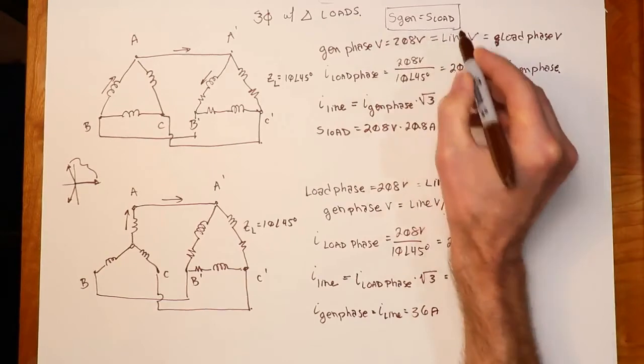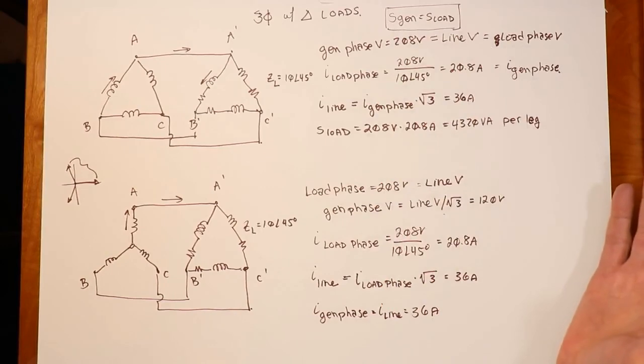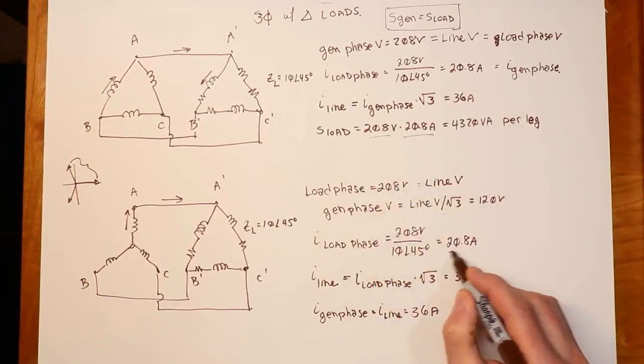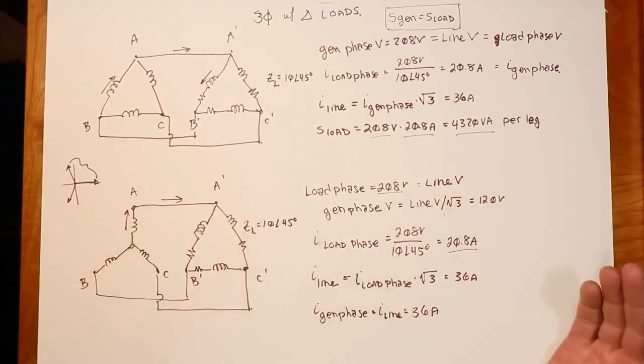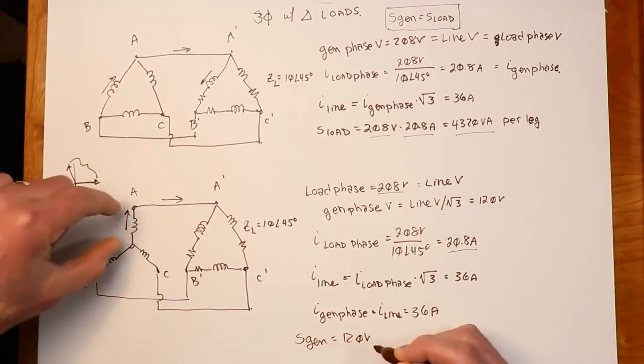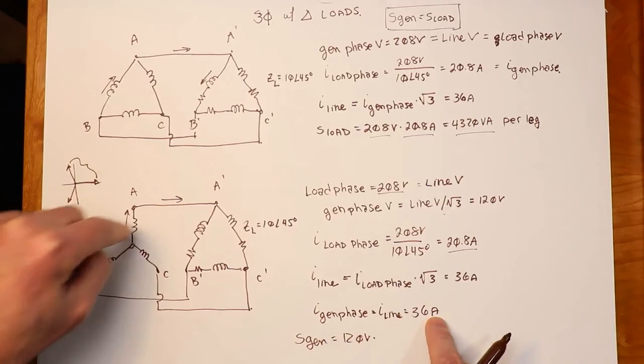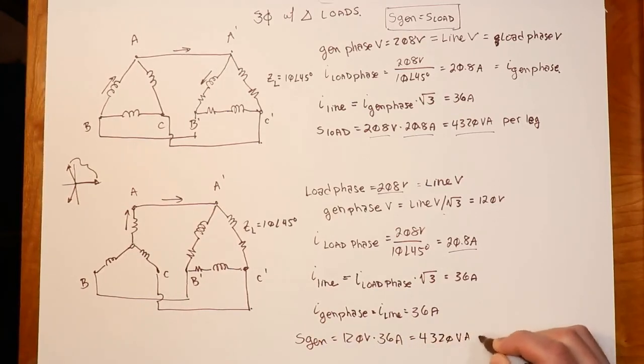Last thing. What do we have for the load and the generator? Well, the load's identical. I mean, this doesn't change. We still have 208 times the 20.8. There's the 20.8, there's the 208. So that's still going to be 4320. Now what about on the generator side? Does this work out correctly? Well, on the generator side, we get 120 volts for the generator phase voltage. And then we multiply that by the generator phase current, which happens to equal the line current. And when you multiply those out, guess what? You'll get 4320 volt amps per leg again.